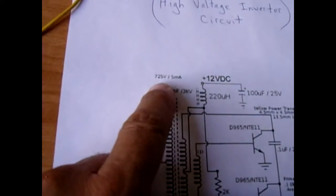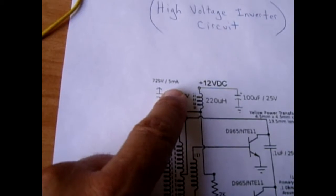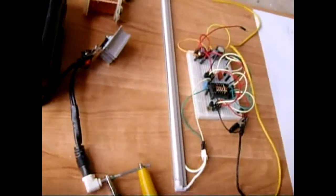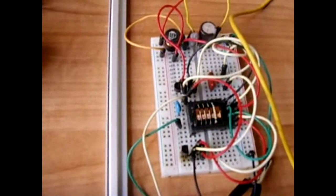Power output is roughly 725 volts at 5 milliamps and it will light this scanner tube up right here. Let me show you a close-up of the circuit.